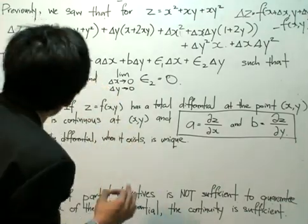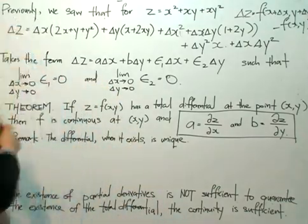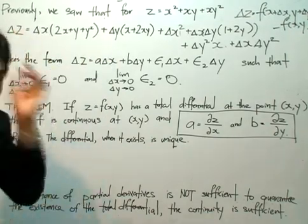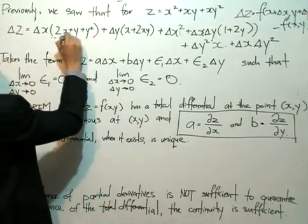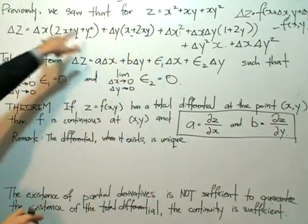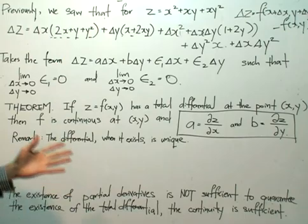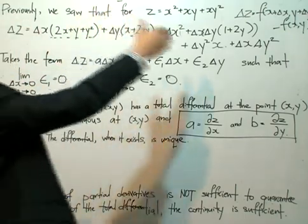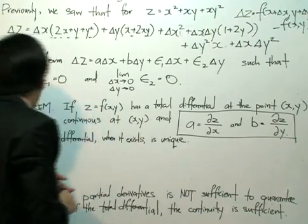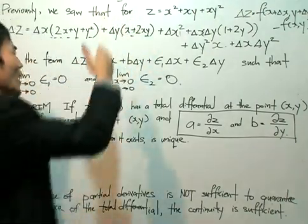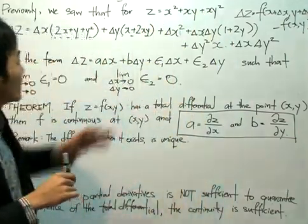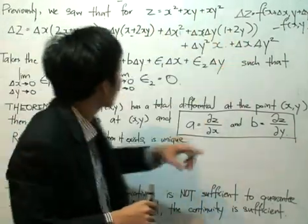We say that delta z is a linear function of delta x and delta y. The coefficients of delta x and delta y — those two functions — are independent of delta x and delta y, because x and y start out as a fixed point. Plus, there are terms involving delta x and delta y raised to higher degrees, such as delta x squared and delta y squared.